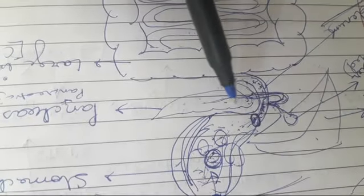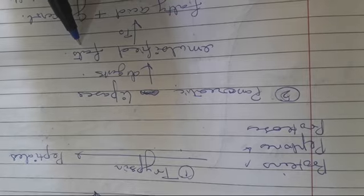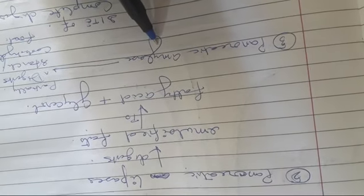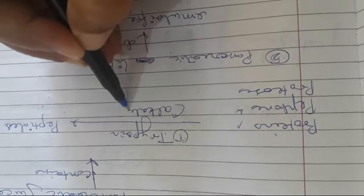Now let us study about pancreatic juice. The pancreas, located just below the stomach, secretes pancreatic juice. Pancreatic juice contains three important enzymes: trypsin, which is a protein-digesting enzyme; pancreatic lipase, which digests fat; and pancreatic amylase. Let us study each one by one. Trypsin acts in alkaline medium.